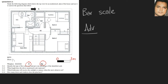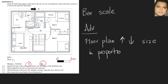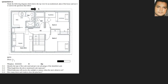The advantage of the bar scale is that it will increase or decrease in proportion to the floor plan — if the floor plan increases or decreases in size, so does the bar scale in proportion. That's important to point out. Regarding the length the scale represents, the zero and the three-meter mark should be here, so that length would be three meters.